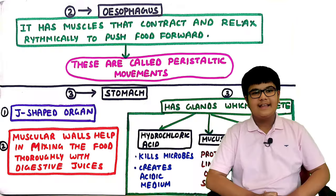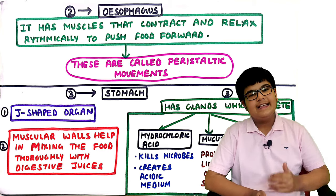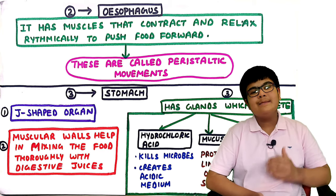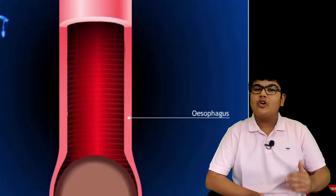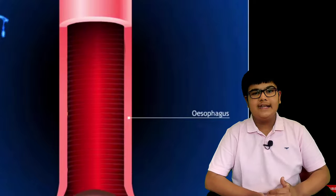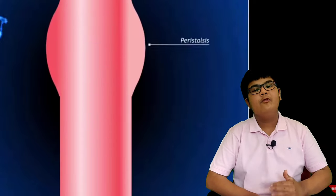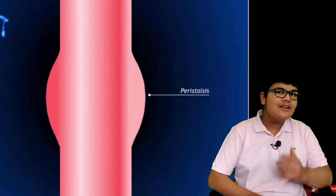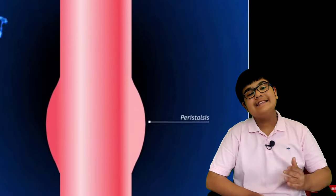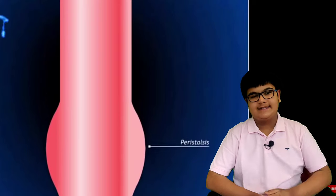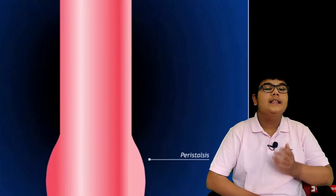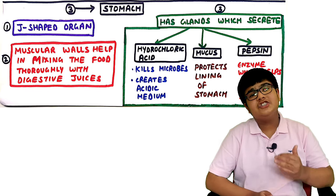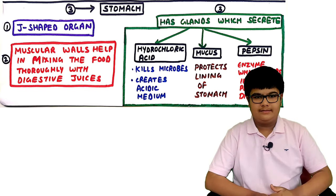Second, the esophagus - it has muscles that contract and relax rhythmically to push food forward; these are known as peristaltic movements. Third, the stomach - it is a J-shaped organ.